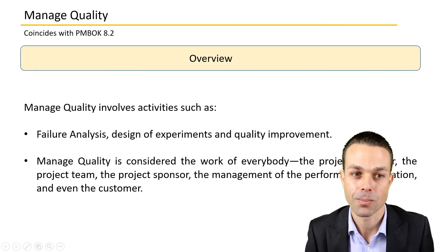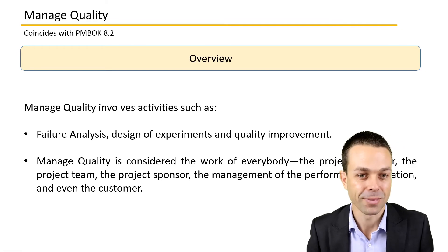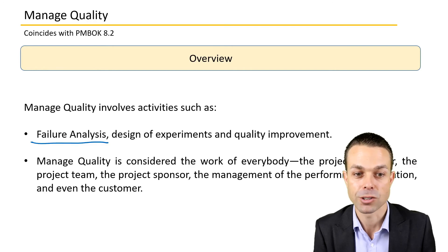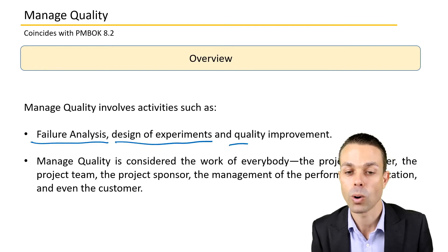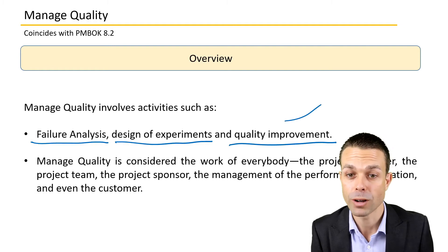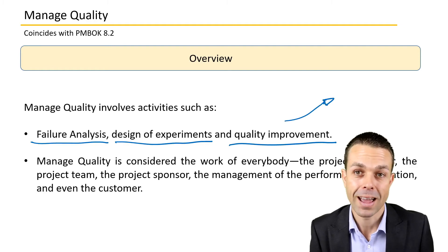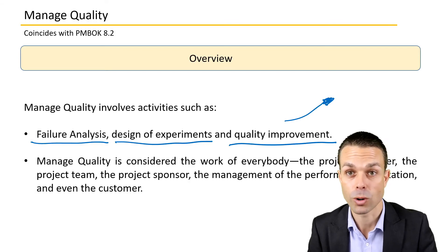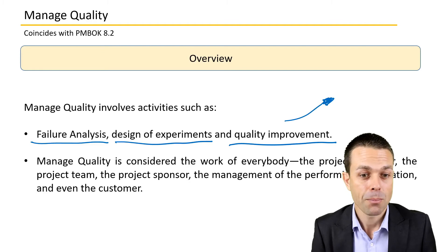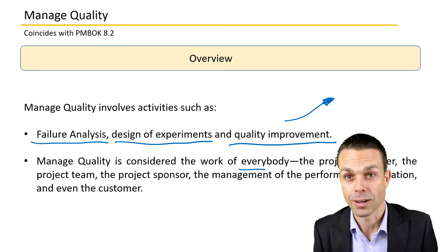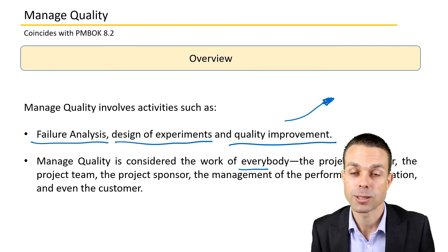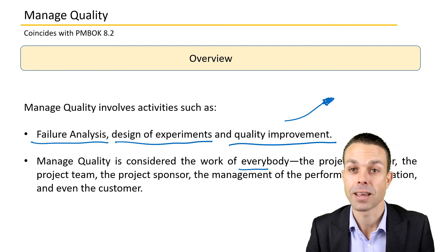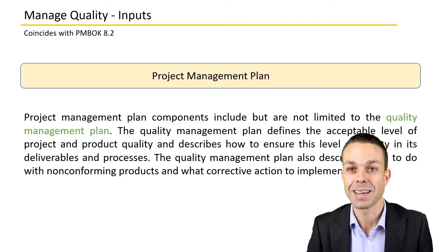Managing quality involves activities such as failure analysis, design of experiments, and quality improvement — improving the process over time. This is where agile comes into play with retrospectives: how did the team go, what can we improve, how can we improve our way of work? Managing quality is considered the work of everyone: the project manager, project team, sponsor, management of the performing organization, and even the customer.